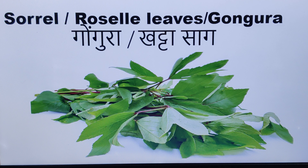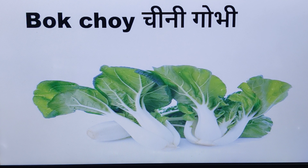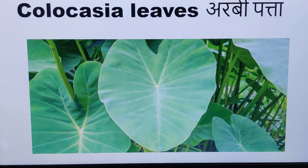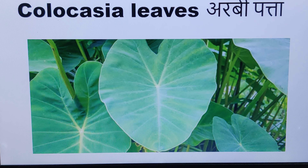Sorrel — Gongura Leaves — Roselle Leaves — Kata Sag. Bok Choy — Chini Gobi. Swiss Chard — Kulukasya Leaves — Harbi Patta.